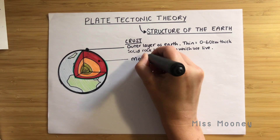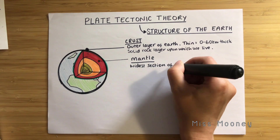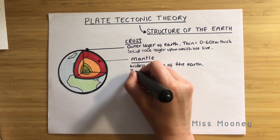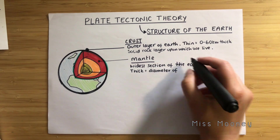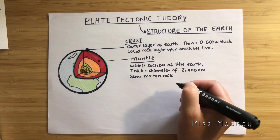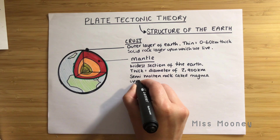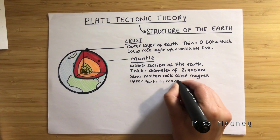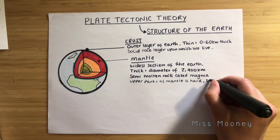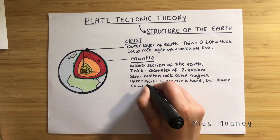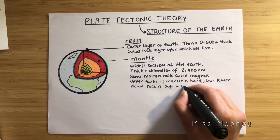Underneath the earth's crust is the mantle. This is the widest section of the earth with a diameter of just under 3,000 kilometers thick. It's made up of semi-molten rock called magma — semi-molten essentially means it's a very thick liquid that isn't 100% melted. When this magma breaks through the earth's crust we then call it lava, so that's the difference between the two. The upper part of the mantle nearest to the crust is harder because it is cooler, but lower down the rock is softer because of the heat.